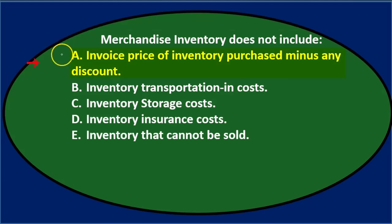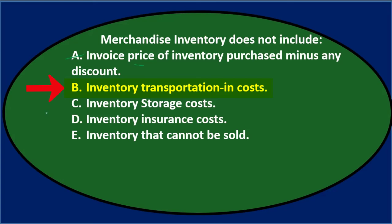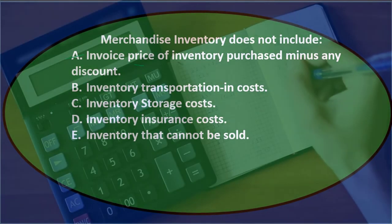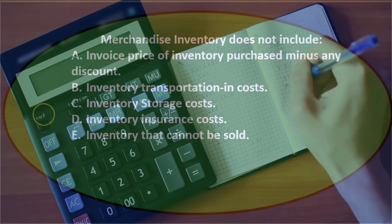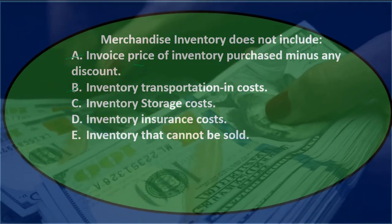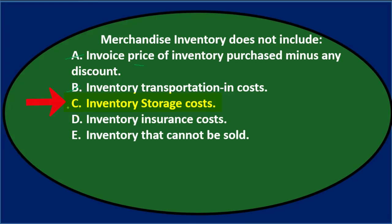Merchandise inventory does not include: A — the price of inventory purchased minus the discount. That's the most obvious thing included in inventory, so not A. B — inventory transportation-in cost. If we paid for transportation, we include it in inventory — not just a freight-in expense — because we used transportation to acquire the inventory, and we'll expense it through cost of goods sold when we sell it. So not B. C — inventory storage. Same scenario: storage costs paid to get inventory ready for sale are included in inventory cost, not expensed immediately. So not C. D — inventory insurance. Same concept: insurance paid to get inventory ready for sale is included in inventory cost. So not D.